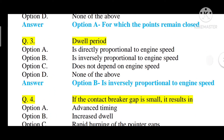Question number three: what is the dwell period? Option A: it is directly proportional to engine speed, option B: it is inversely proportional to engine speed, option C: does not depend on engine speed, option D: none of the above. The correct answer is option B — it is inversely proportional to engine speed. Dwell is inversely proportional to engine speed.